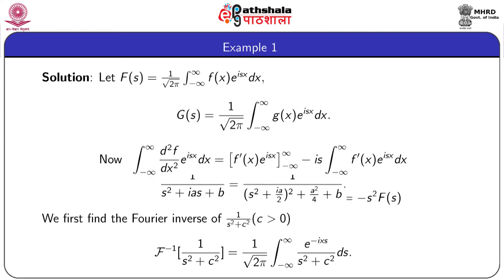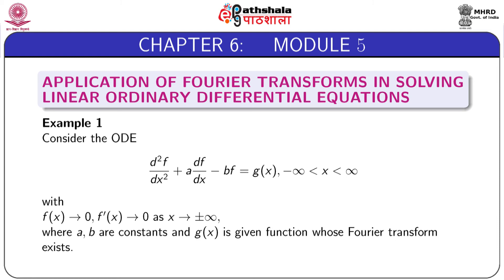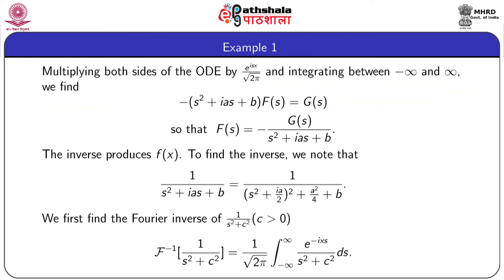Using these results, the ordinary differential equation reduces to (-s² + ias + b)·F(s) = G(s). Now, if we take the inverse Fourier transform of F(s) from here, then we find f(x), which is the required solution of this differential equation. So the next task is to find the inverse Fourier transform of this expression.